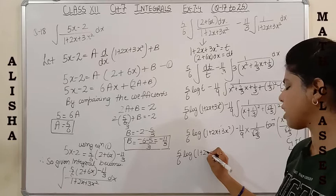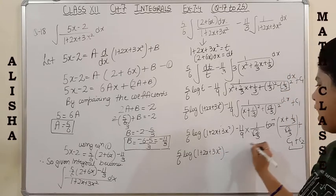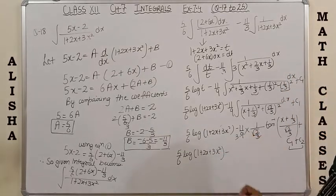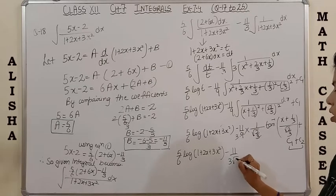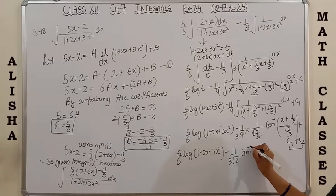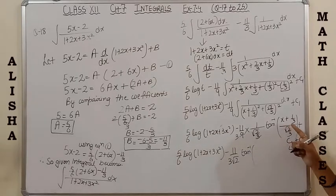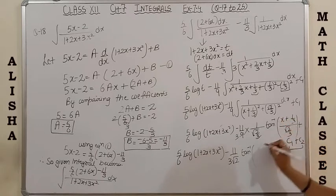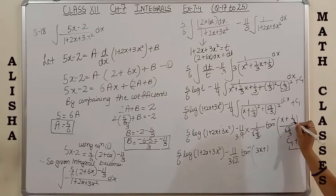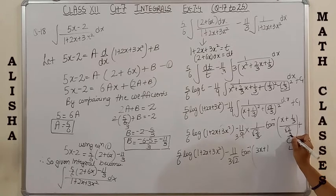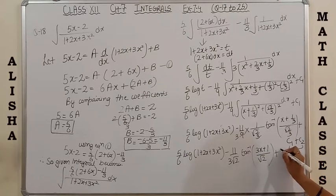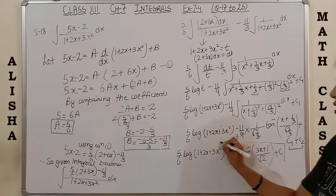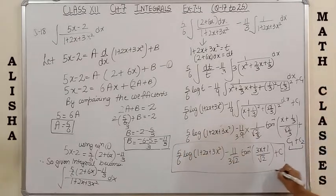Simplifying the constants: (11/9) × (3/√2) = 11/(3√2). Taking LCM for the tan inverse argument: (3x+1)/√2. The final answer is: (5/6)log|1+2x+3x²| - (11/(3√2)) tan⁻¹((3x+1)/√2) + C. Please note down.